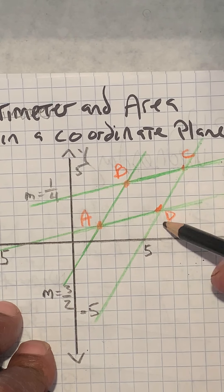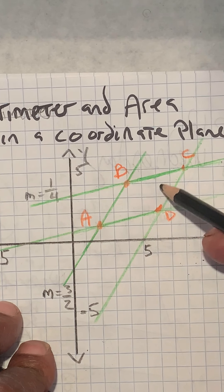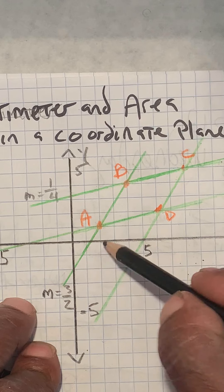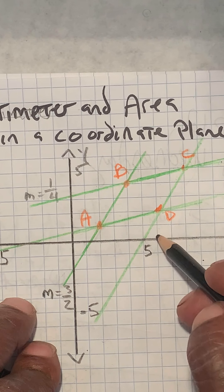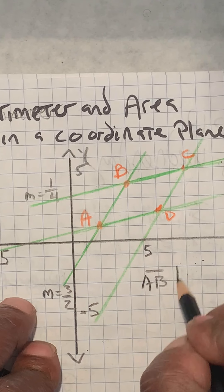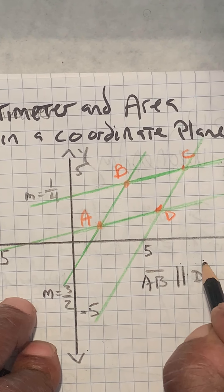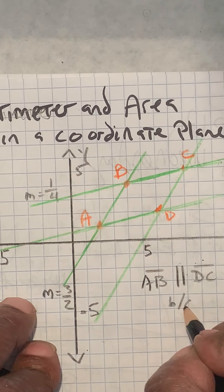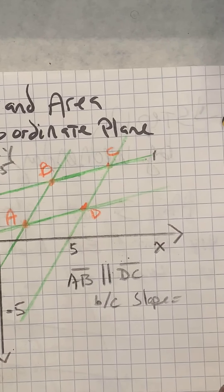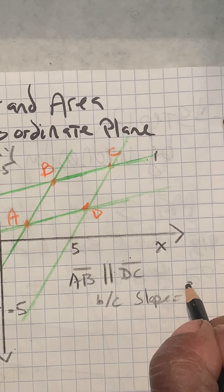And we'll check from D to C. We have to go up one, two, three, and over two. So that's the same as this slope. So now we know that AB and DC are parallel because they both have slope equal to three halves.